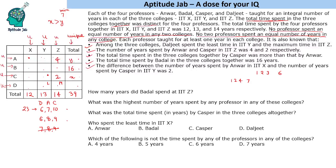Since Daljeet must spend a total of 6 years, the only way to make 6 using three distinct positive integers is 1+2+3. Daljeet's IIT-Y value is the least (1 year), IIT-Z is the maximum (3 years), and IIT-X is 2 years. So Daljeet: IIT-X=2, IIT-Y=1, IIT-Z=3, total=6. For the column totals: IIT-X needs to sum to 12, so remaining is 12−2=10. IIT-Y needs 13, remaining is 13−1=12. IIT-Z needs 14, and Anwar has 4 and Kasper has 2 in IIT-Z, giving 4+2+3=9, so Badal has 14−9=5 in IIT-Z.